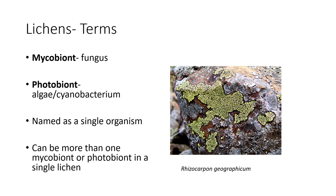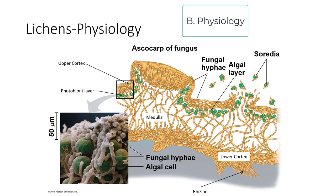Lichens are confusing but fascinating organisms, often the first to colonize bare rock. They can dissolve rock and create soil, making them likely among the first organisms to exist on land. Lichens have an ascocarp since they are Ascomycota, containing asci and ascospores that spread fungal spores without algae. To reproduce both the fungal and algal symbiont together, they produce soredia — small dust-like pieces that fragment off and can form new lichens.